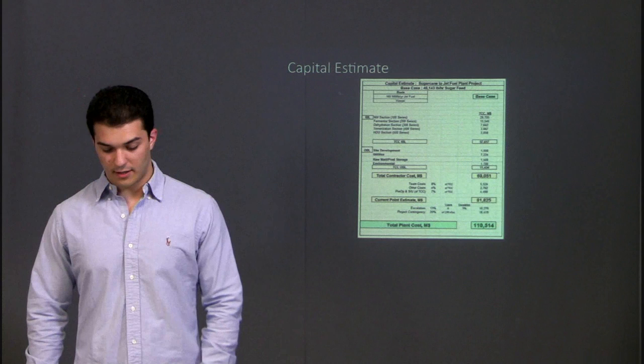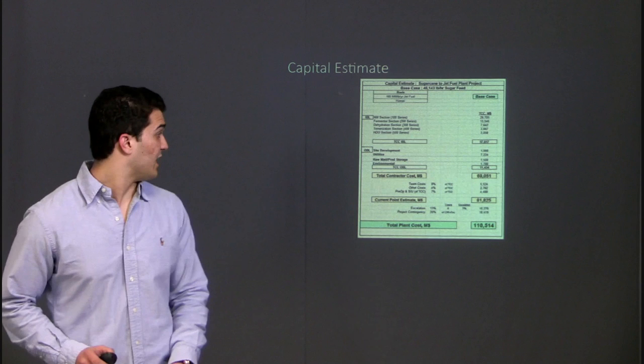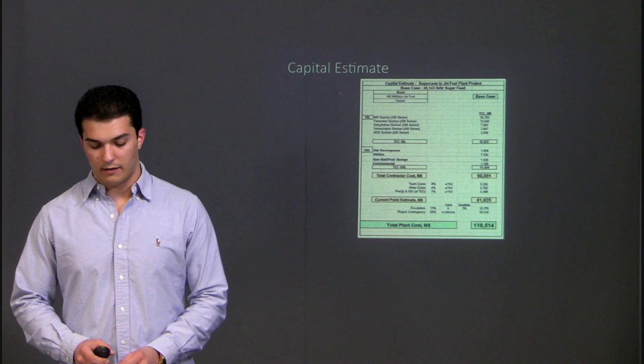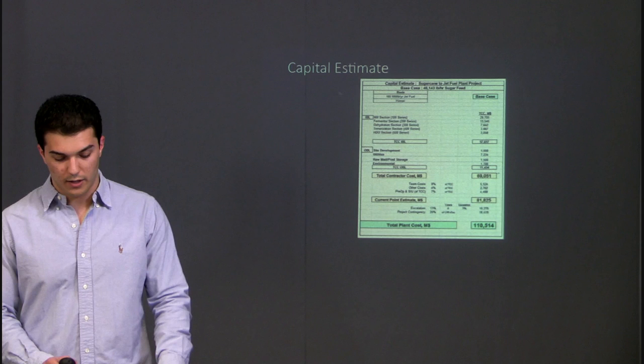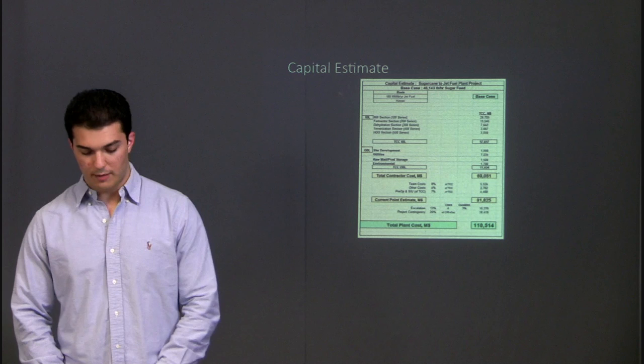To start off the economic analysis of the proposed project, we first generated a capital cost estimate. After further evaluation, the overall cost for the jet fuel plant totaled in to be around $111 million. This calculation was based on a total plant capacity of 185 million pounds per year of jet fuel product, with a primary sucrose feed coming in at a little over 46,000 pounds per hour. Since this project is constrained to Hawaii, an additional location factor of 1.1 had to be carried out through all the fixed costs to represent the additional logistical constraints and costs with this location.